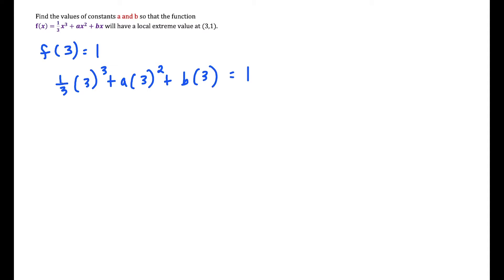We simplify: 27 times a third is 9, and then we have plus 9a and 3b.